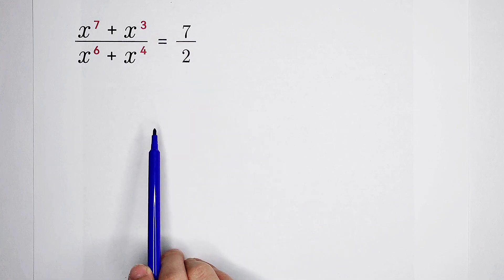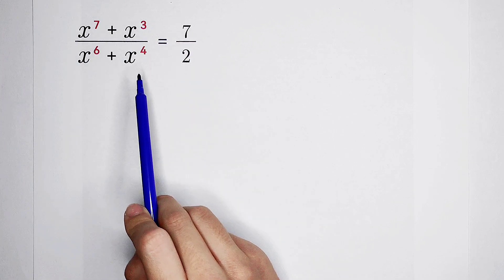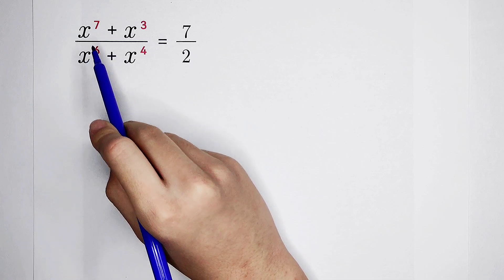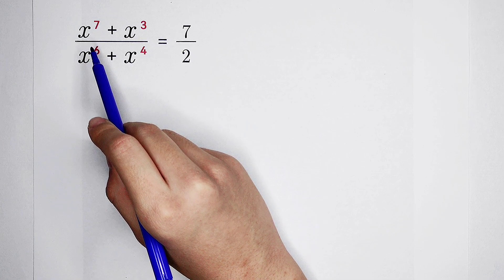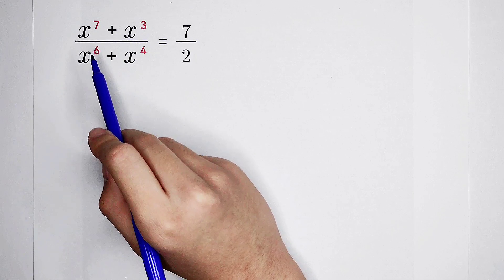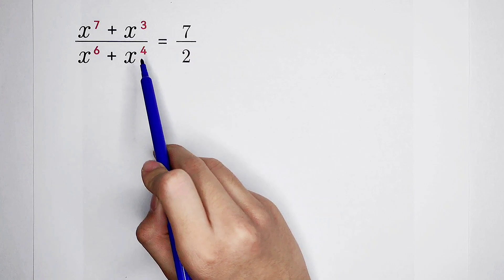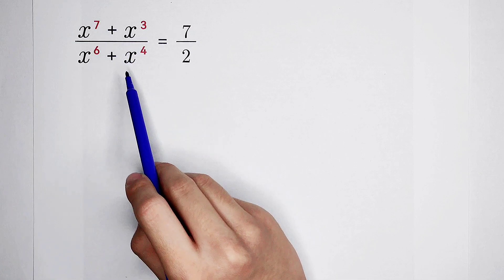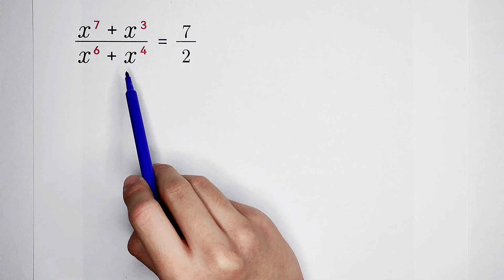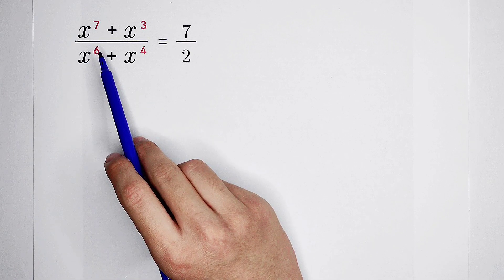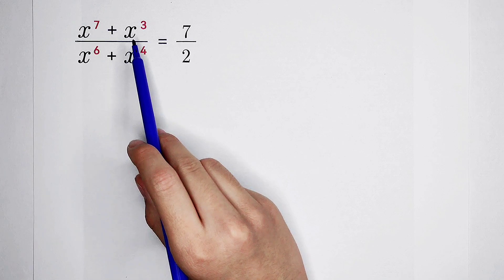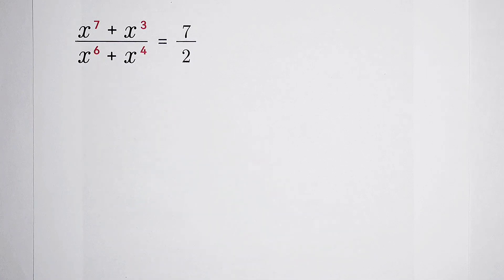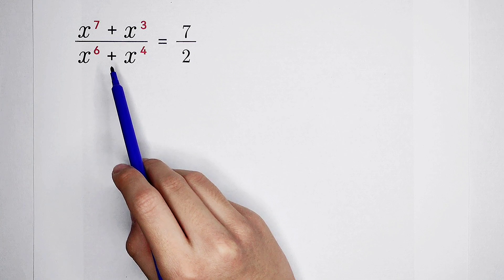Our goal is to make these exponents be lower. The exponents are 3, 4, 6, 7, so the number in the middle is 5. If we want to let the exponents be lower, we should divide the numerator and the denominator by x to the power of 5. Because 7 minus 5 is 2, 5 minus 3 is also 2, and 6 minus 5 equals 5 minus 4, which is 1.